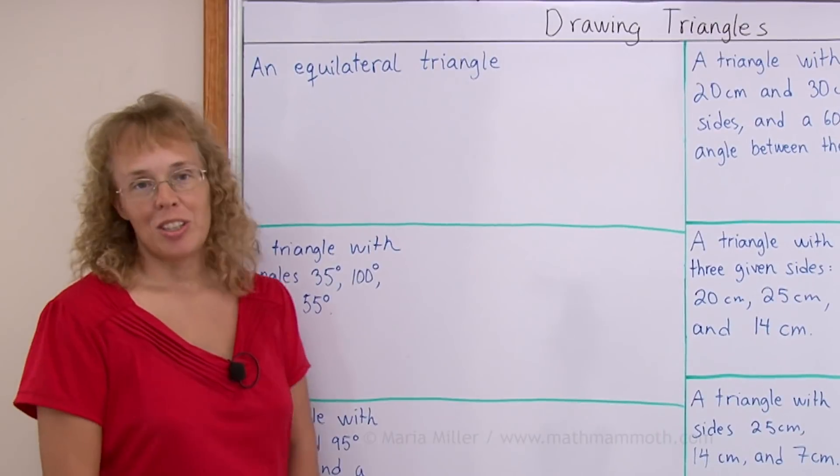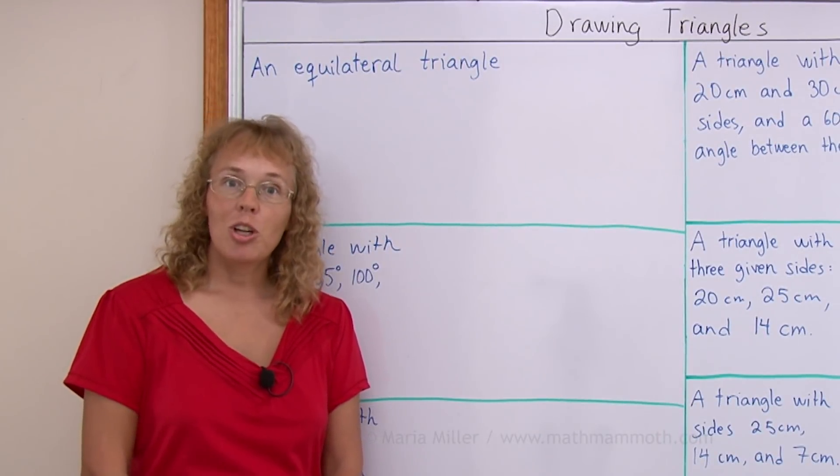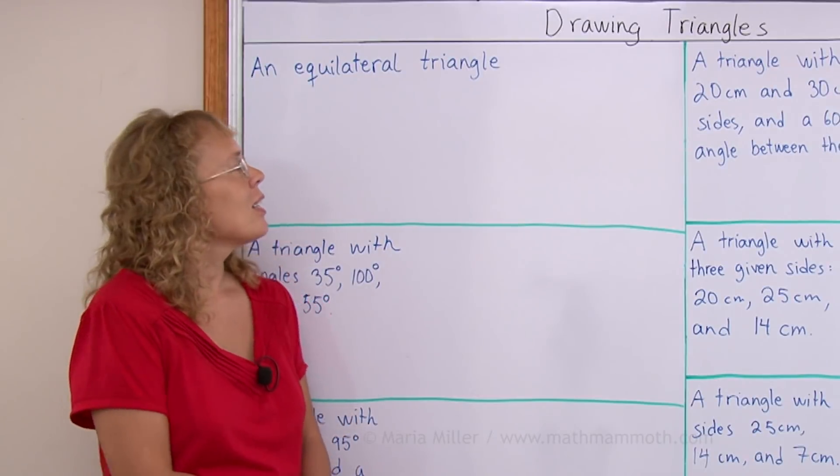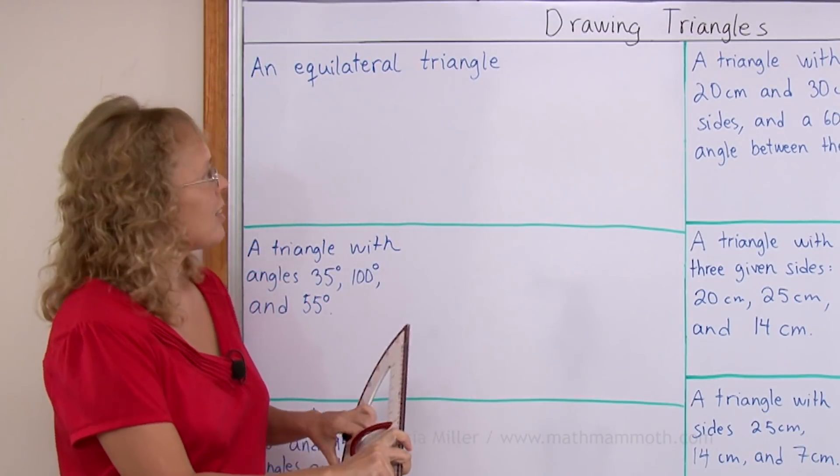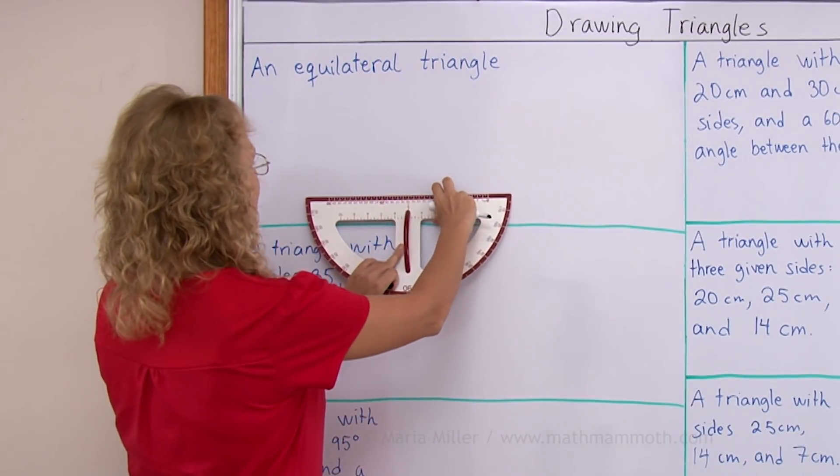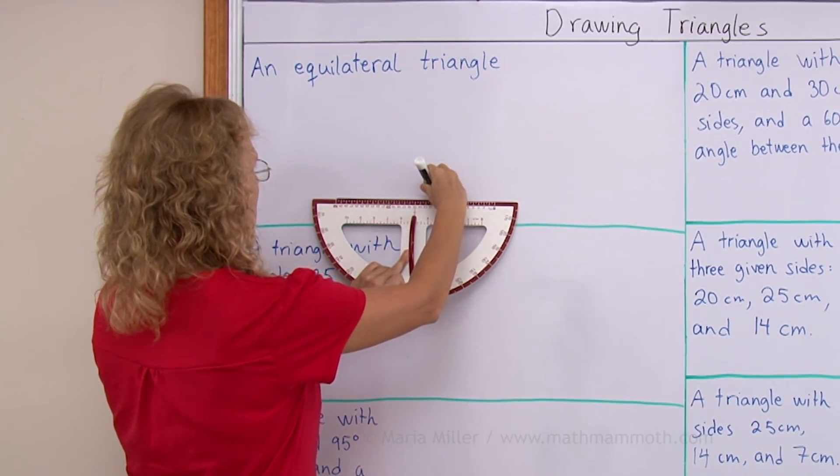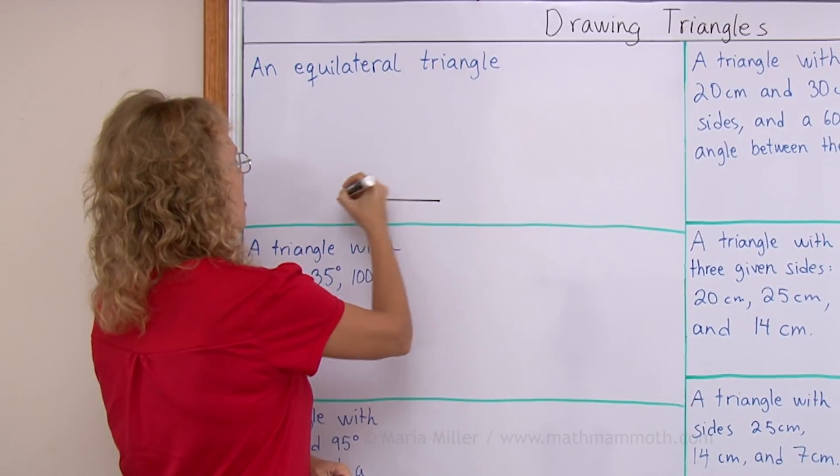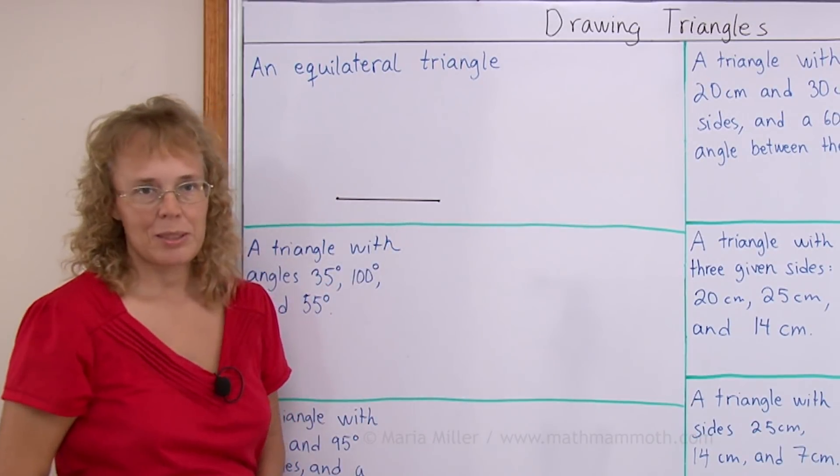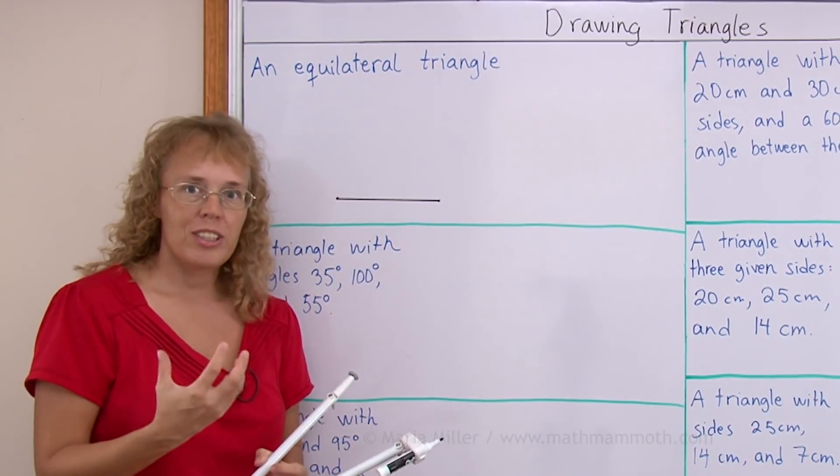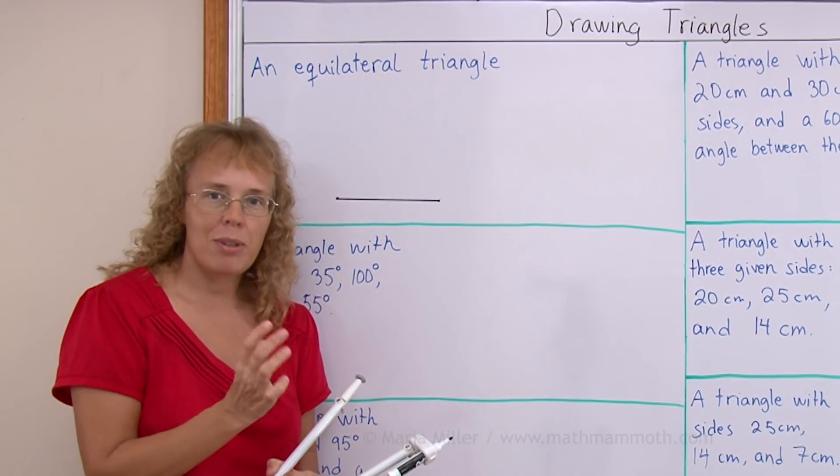My first problem is to draw an equilateral triangle. I will show you a method to draw it using ruler and compass. And I will start out by drawing one side for it. Let's say for example here and now I will take the compass. In an equilateral triangle all three sides are congruent, they have the same length.